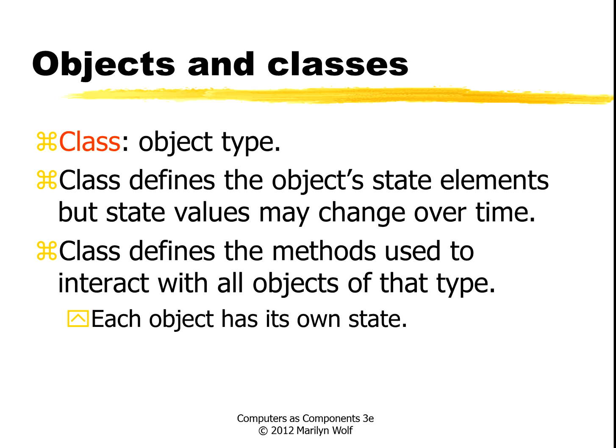Just as data structures have types, objects have classes. But a class includes both the data, the state values, and the methods, or the functions. We define a class, and then we create objects, or instantiate objects of that class.